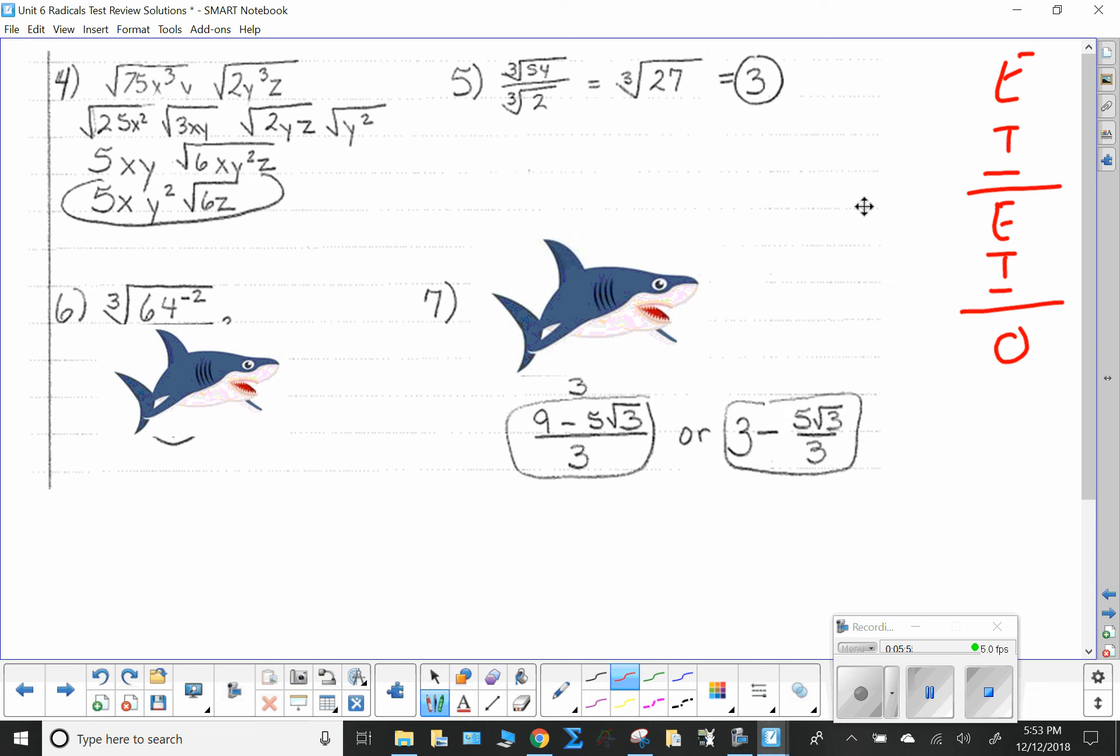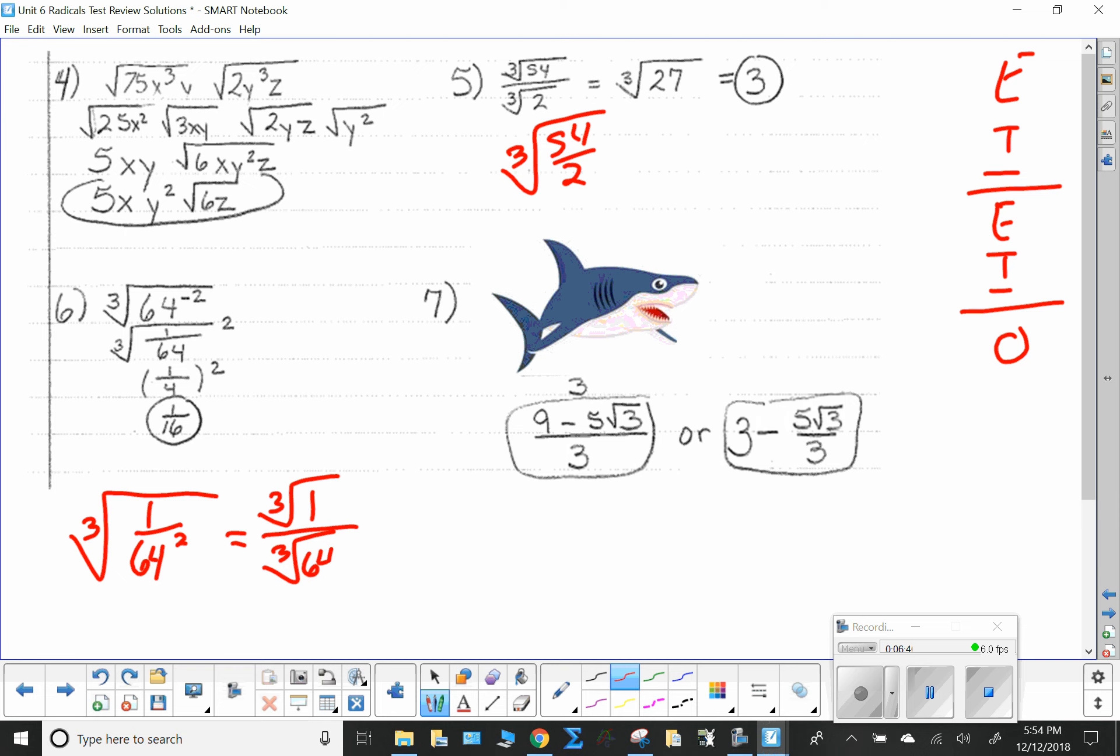Number 5, cube root over cube root. Remember that this can be, I can make this the cube root of 54 divided by 2. 54 divided by 2 is 27. Number 6, negative exponent. That says that I have to take the reciprocal. So now I get the cube root of 1 over 64, where the 64 is squared. So this is where I can break this down, and I can do the cube root of 1 over 64 squared. This becomes the cube root of 1 over the cube root of 64, and then I can square it, because it's easier to take the cube root of 64. 1 over 4 squared, and that's where I get 1 over 16. Different ways, same end, and both valid.